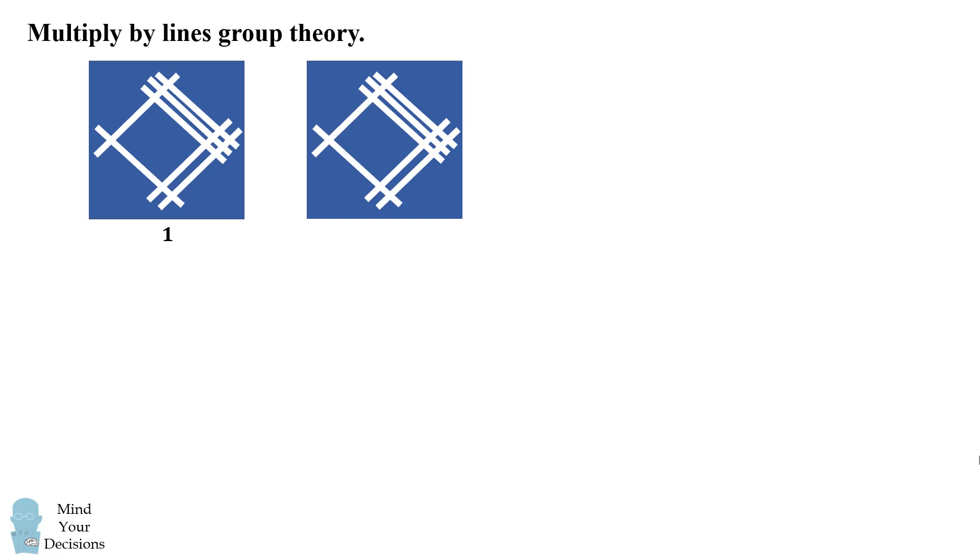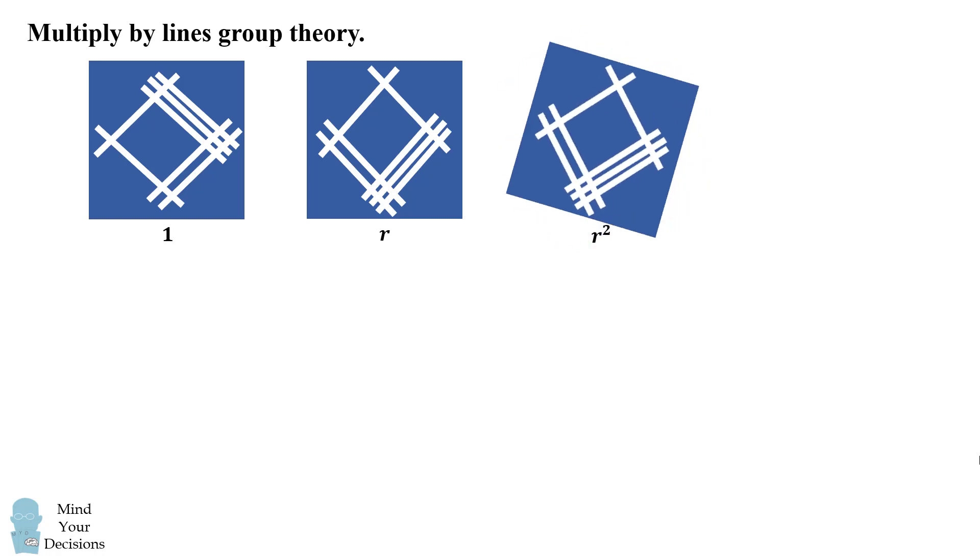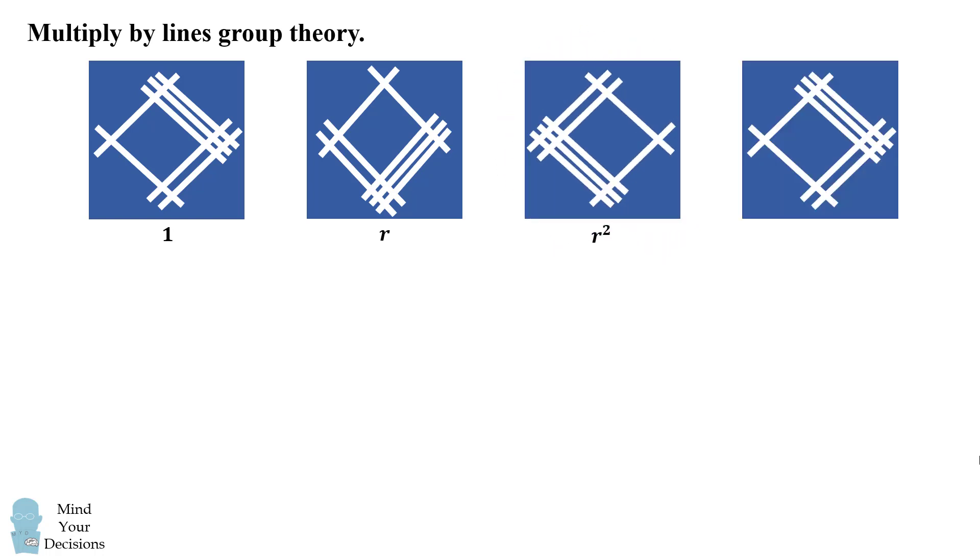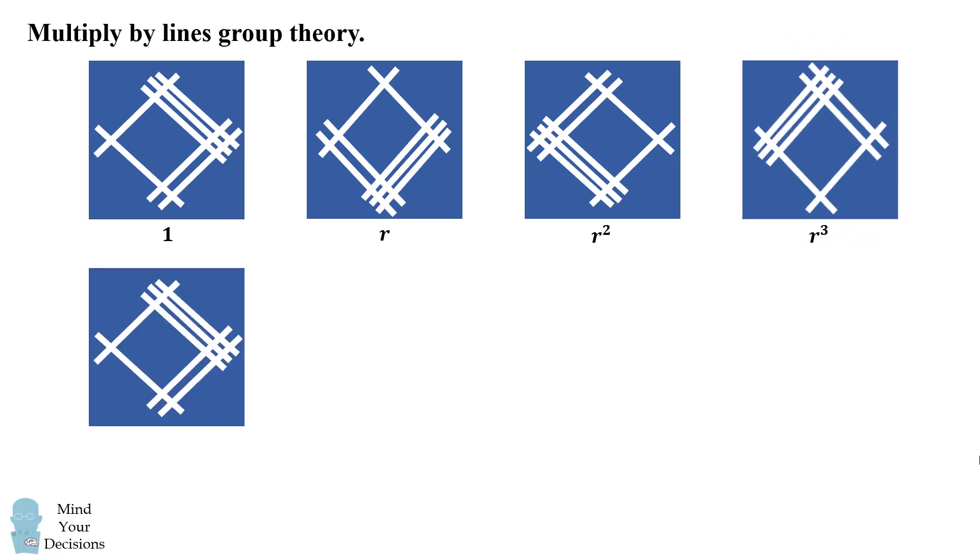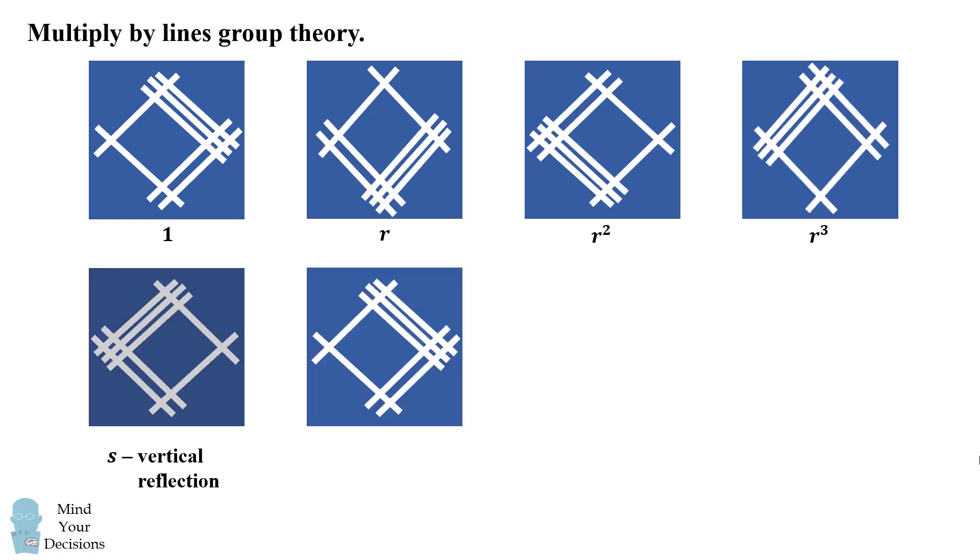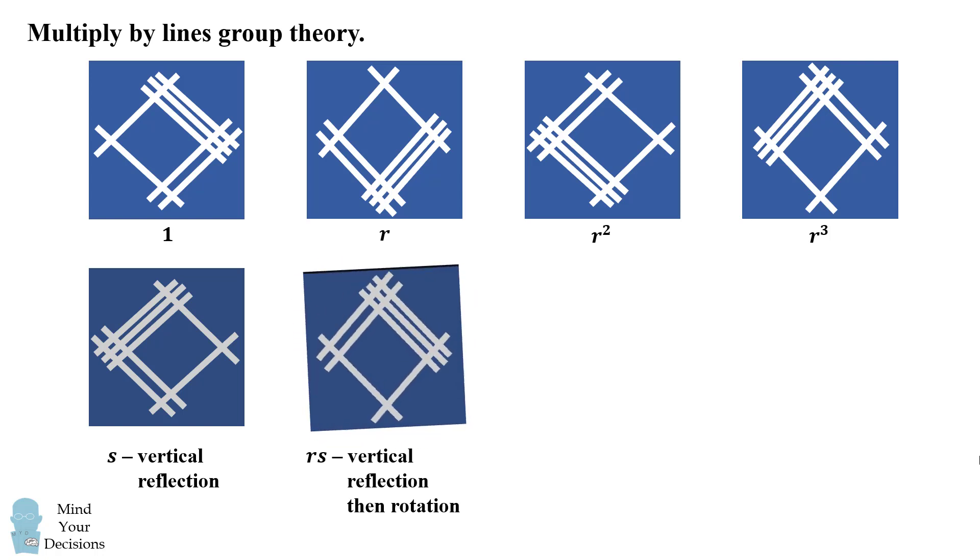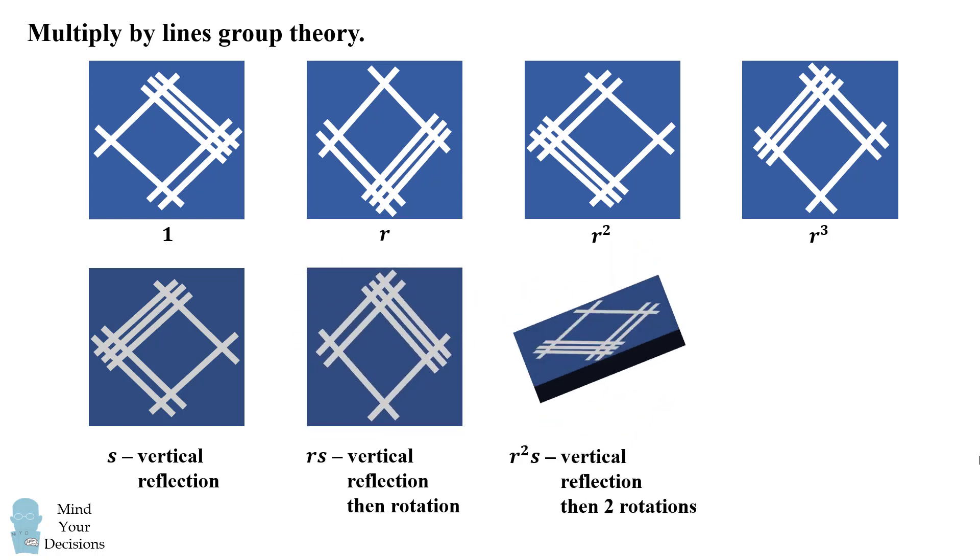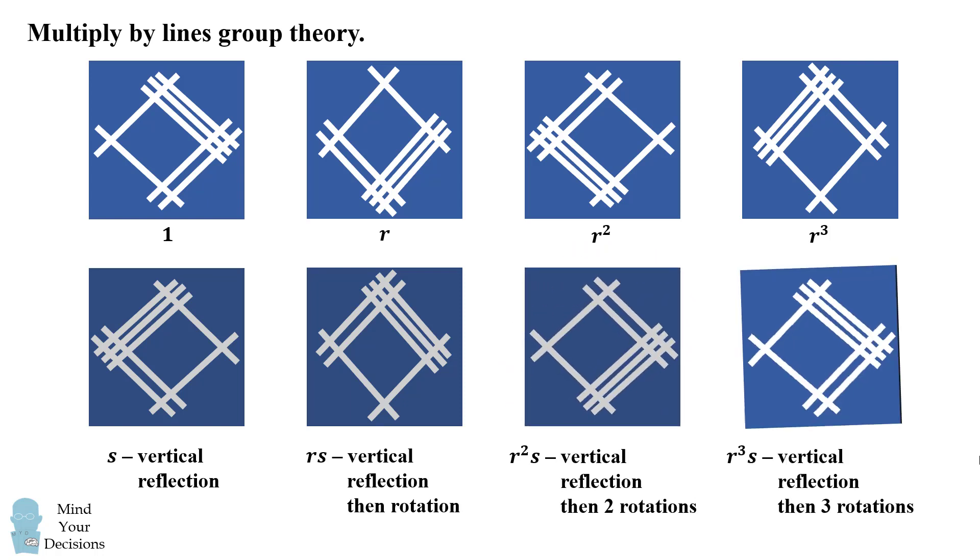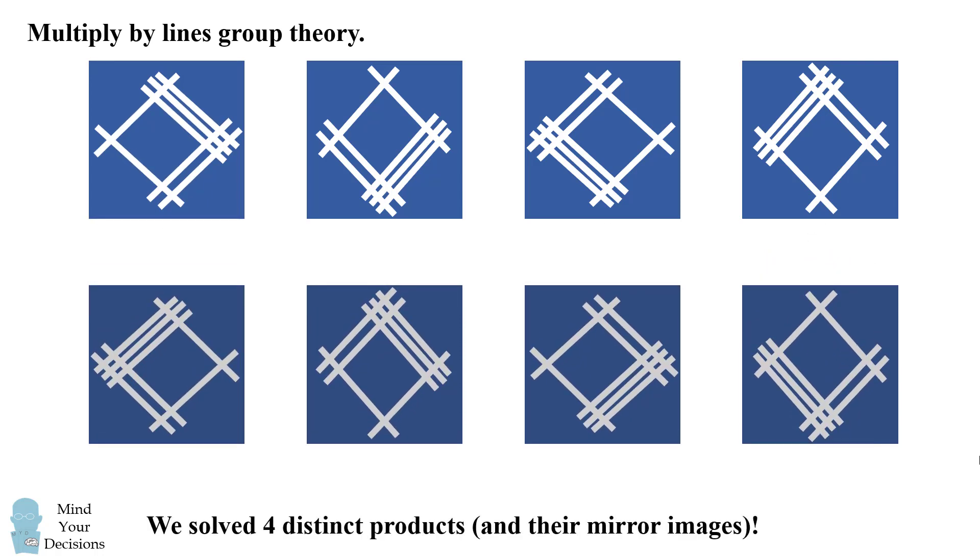We start out with the diagram then we can rotate it 90 degrees to get another problem. We can rotate it 180 degrees to get another problem. We can also rotate it by 270 degrees to get another problem. We can also reflect this diagram vertically and then we can do rotations of this reflection. So we end up with these potential diagrams. We have solved four distinct multiplication products and the bottom row is their mirror images.